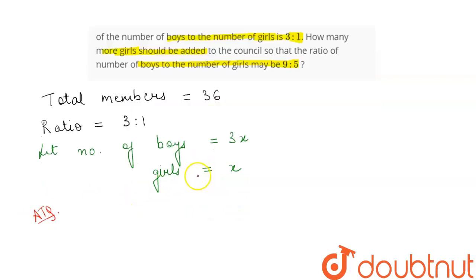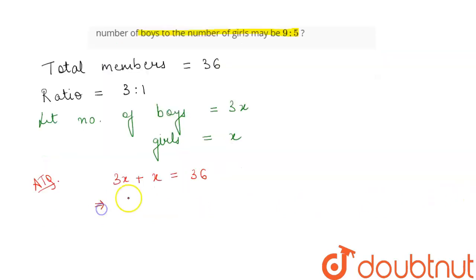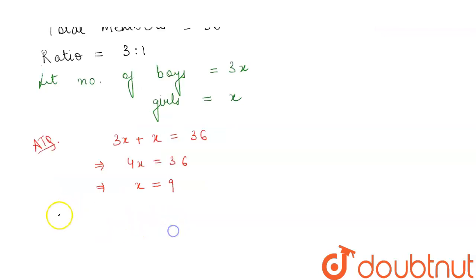the total of boys and girls is 36, so 3x plus x will be equal to 36. This gives us 4x equals 36. Now dividing 4 on both sides, we will get the value of x as 9. So therefore our boys is equal to